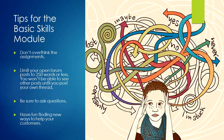Here are some tips. Don't overthink the assignments. The reference interview requires practice, practice. As a librarian, you will be working on these reference behaviors over the course of your entire career. Our goal now is to have you begin this work by identifying your strengths and weaknesses and come up with a plan to improve your skills. The other two assignments will help you develop your own words to answer a common customer question and explore the concept of inclusion. These are short answers, 100 words or less. Limit your open forum posts to 250 words or less.